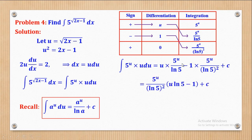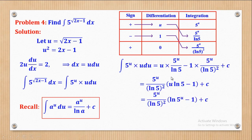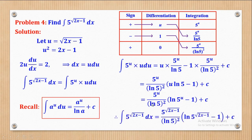Simplifying: 5^u is common in both terms, and ln²(5) is the LCM. Factoring out gives 5^u / ln²(5) times (u·ln(5) − 1) plus c. Eliminating u by substituting u = √(2x−1) gives the final required integral.